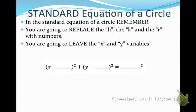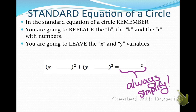In a standard equation of a circle, remember that you only replace h, k, and r with numbers — you leave the x and y as variables. Also remember that you need to simplify the radius squared. You're not going to write 7 squared; you're going to write 49.